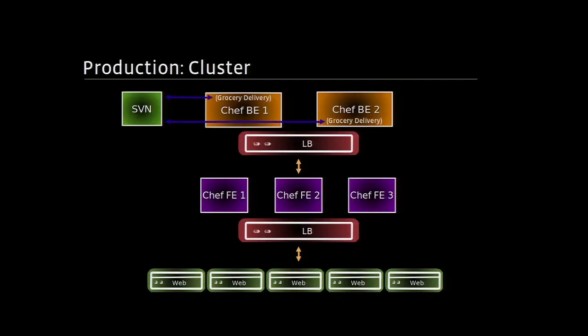Let's zoom into a cluster. Each cluster has two backends; they're not both active at the same time — it's a warm failover. Each backend runs a small piece of software we wrote called grocery delivery. Grocery delivery is a small shell script that checks out the subversion repo and updates it every minute. When it updates, it looks at all the differences since the last update, uploads any changed cookbook or role locally, and deletes anything that was deleted. Both backends do this all the time. Roles and cookbooks are in sync all the time.